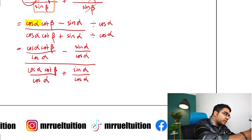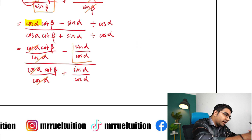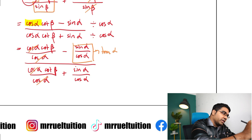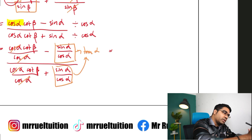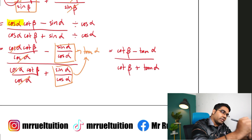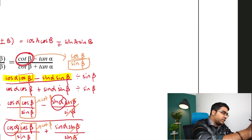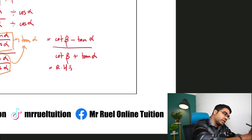After simplifying: cos(α) cancels to leave cotangent β, and sin(α)/cos(α) is simply tangent α. So we have cotangent β minus tangent α over cotangent β plus tangent α — this equals the right-hand side and the identity is proven. This is how we use the addition formula to verify trigonometric identities.